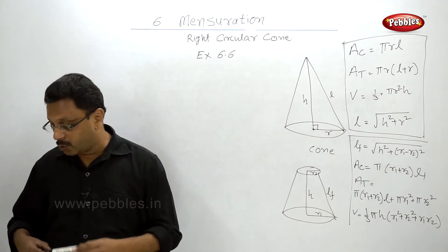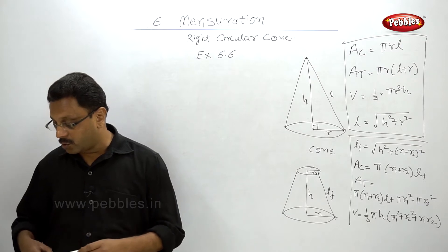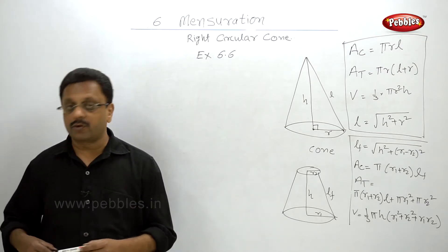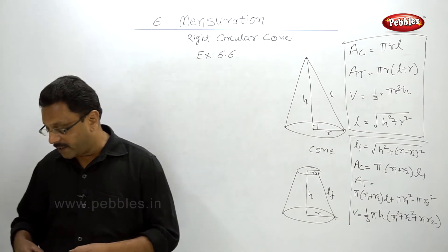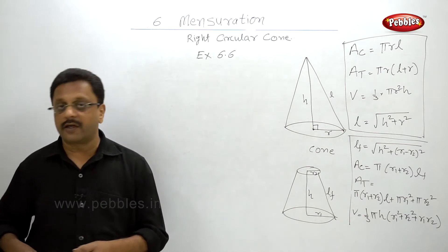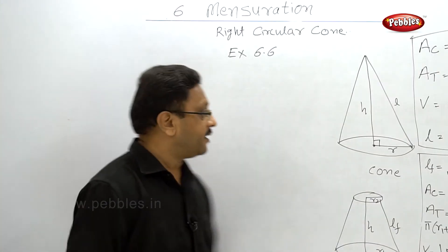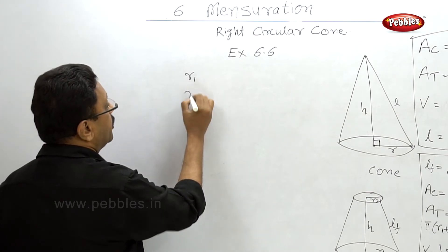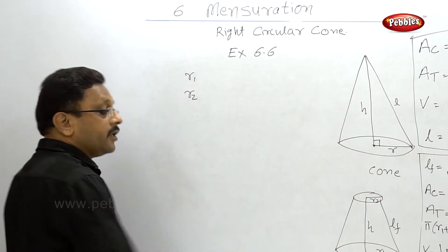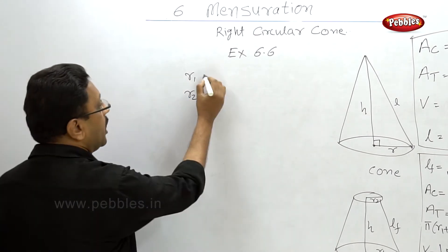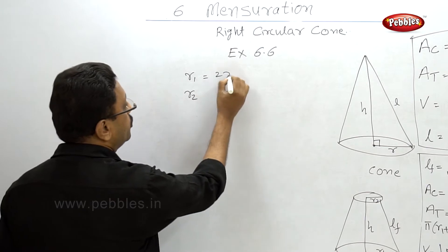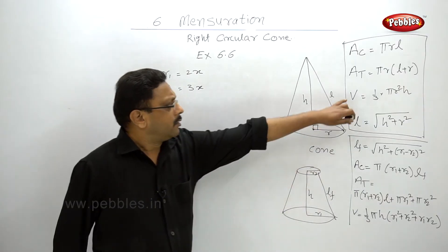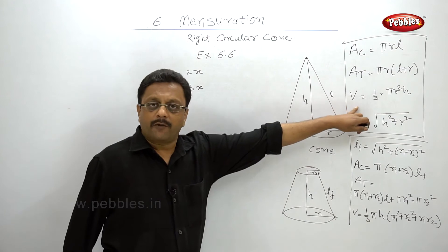The second problem: the base radii of two right circular cones of the same height are in the ratio 2:3. Find the ratio of their volumes. They have stated that r1 and r2 are in the ratio 2:3, so r1 = 2x and r2 = 3x.